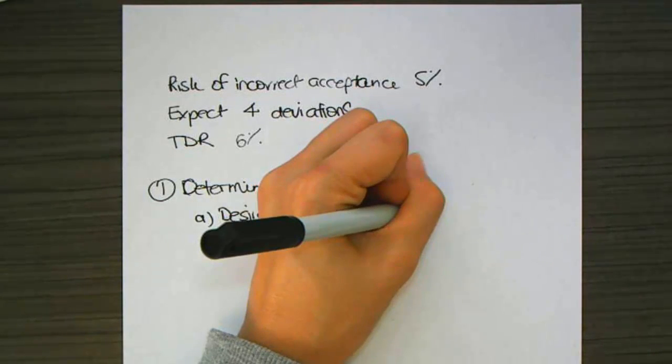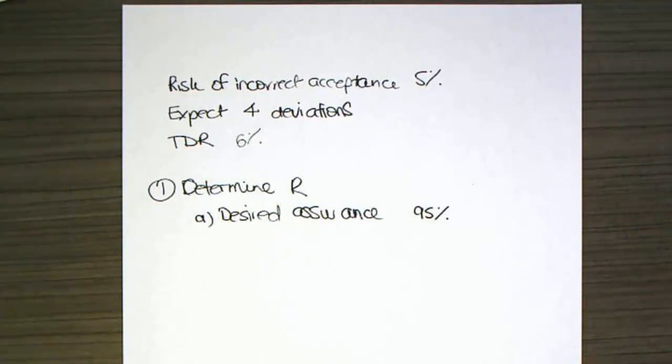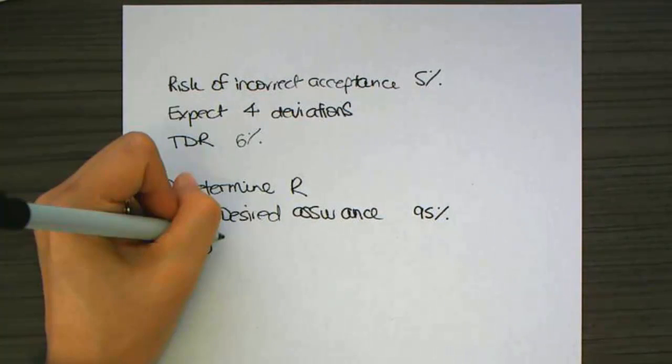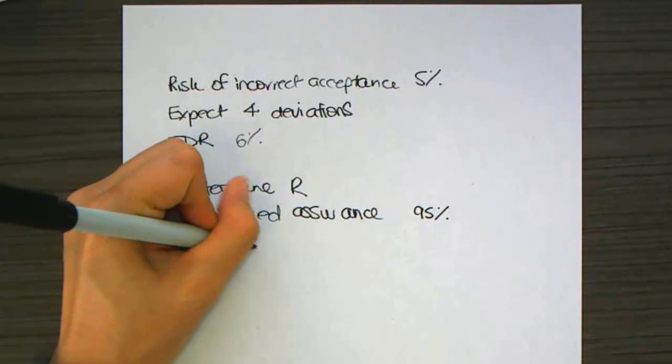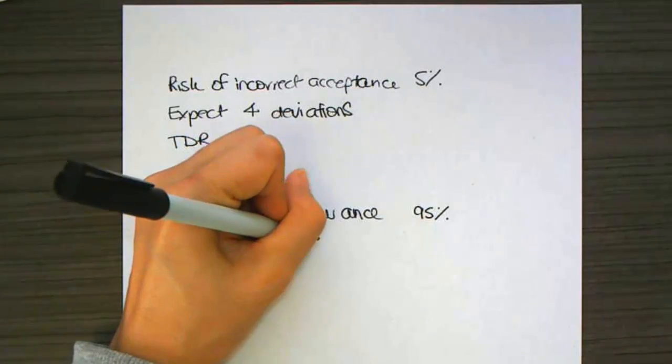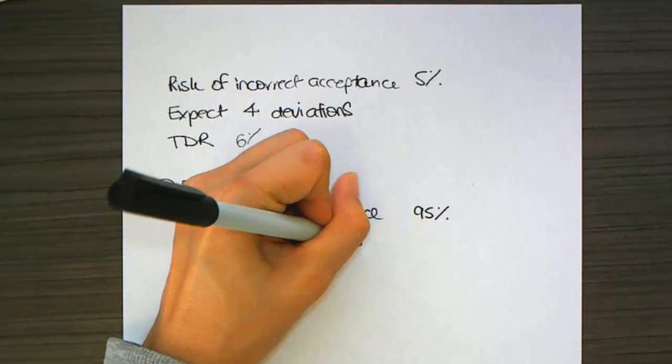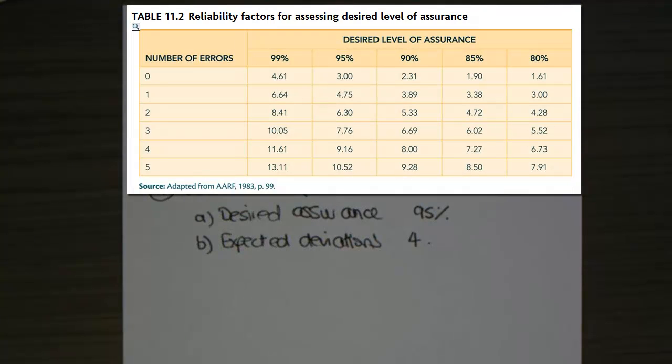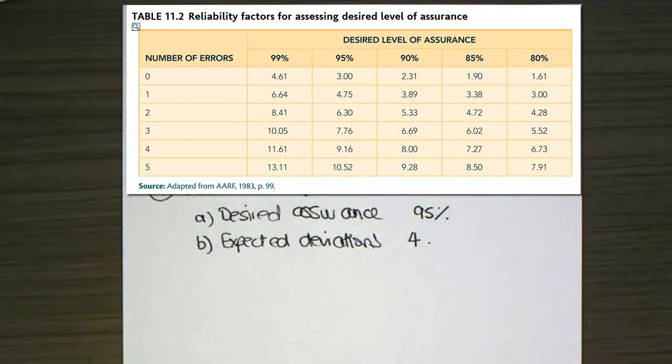And then the next part I need to do is I know my expected deviations, 4. So if I use the table that I'm about to show you on screen, and I look at 95% with 4 errors, that gives me an R figure of 9.16. OK, so that's the first step, which is determining R.